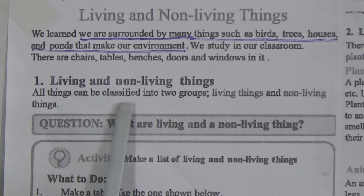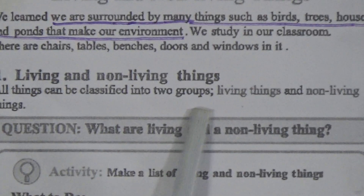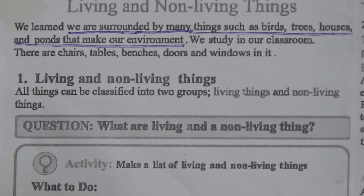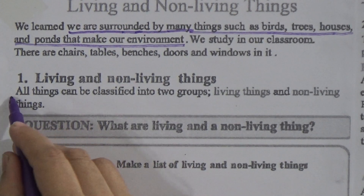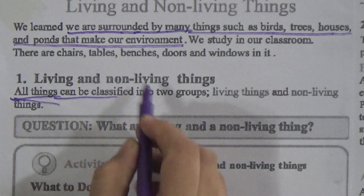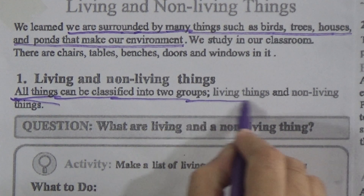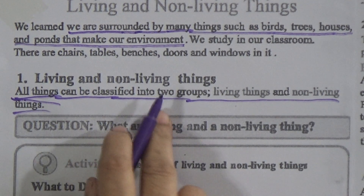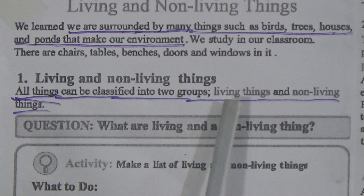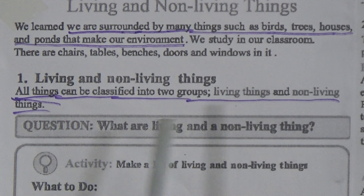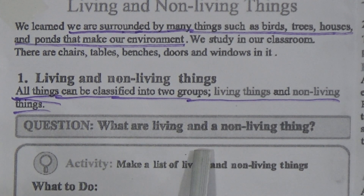All things can be classified into two groups: living things and non-living things. Highlight and underline this line - you have to memorize it properly. This is also a question-answer: all things can be classified into two groups - living things and non-living things.